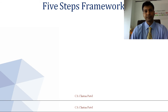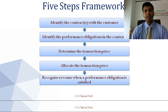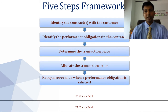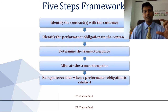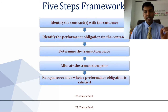IFRS 15 provides a five-step framework. Step one: identify the contract with the customer. Step two: identify the performance obligations in the contract. Step three: determine the transaction price. Step four: allocate the transaction price. Step five: recognize revenue when a performance obligation is satisfied. This framework makes it clear what every company and professional must do at the time of revenue recognition — each step must be complied with.